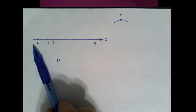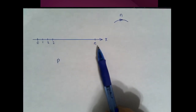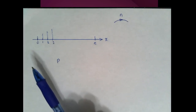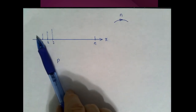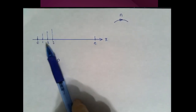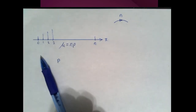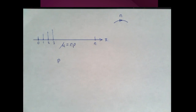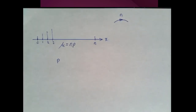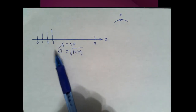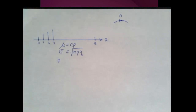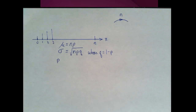So we could have zero successes, one, two, three, all the way up to n. The binomial probability distribution shows the probability associated with each number of successes. The mean of this distribution is n times p, the probability of success, or the proportion of the population in that category. The standard deviation is the square root of n times p times q, where q is the probability of failure, or one minus p.